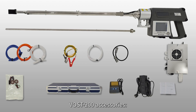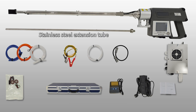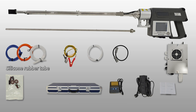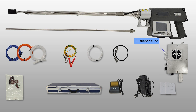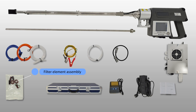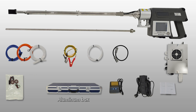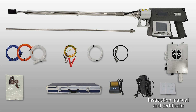VOST-200 accessories include: the host, stainless steel extension tube, silicone rubber tube, ground wire, polytetrafluoroethylene tube, communication and refrigeration module, U-shaped tube, stainless steel adsorption tube, filter element assembly, O-rings, fluor gel transfer sleeve, aluminum box, printer, power adapter, power cord, instruction manual, and certificate.